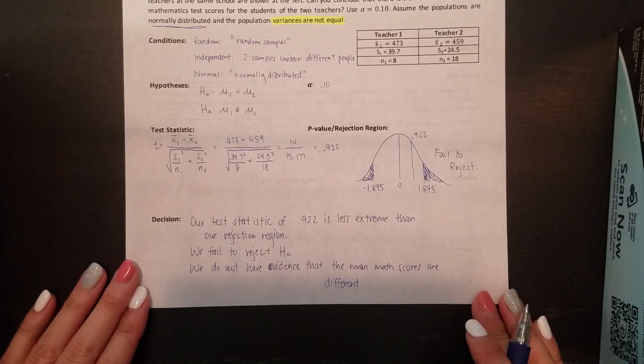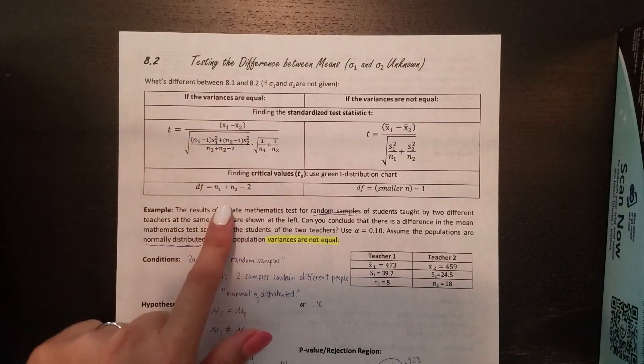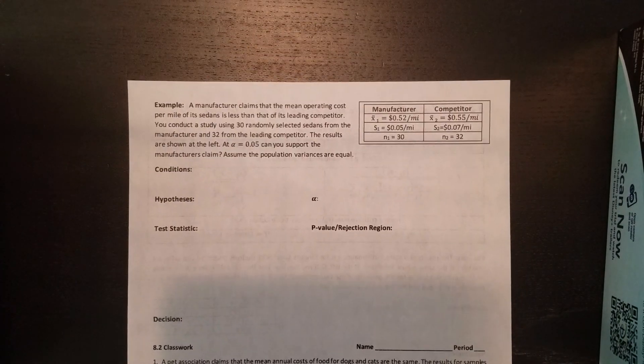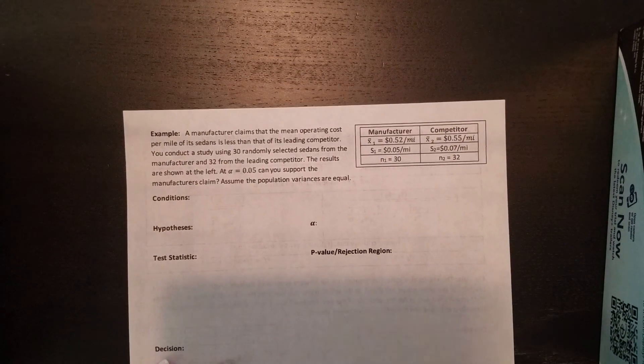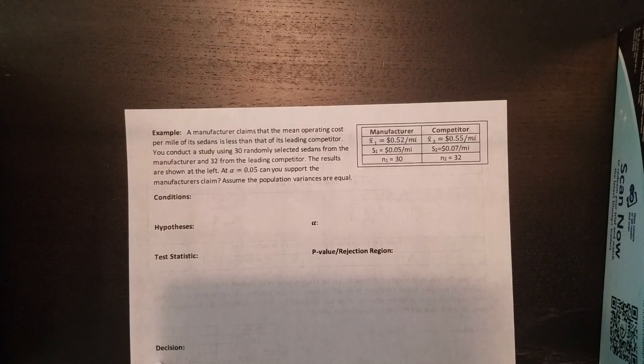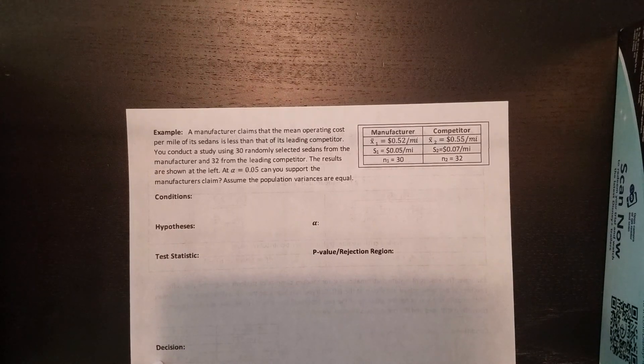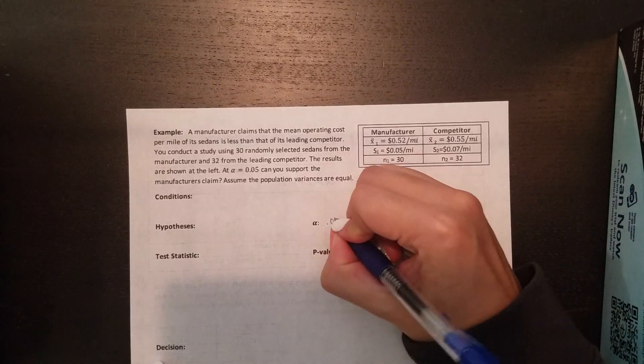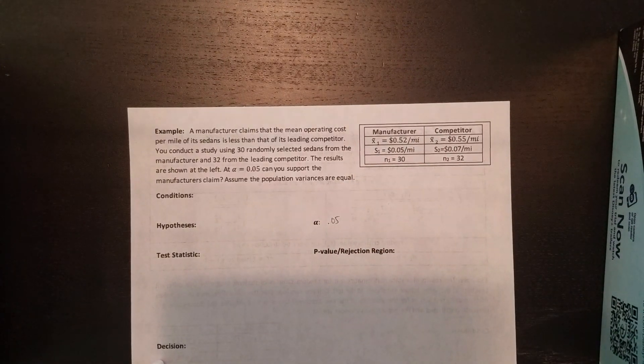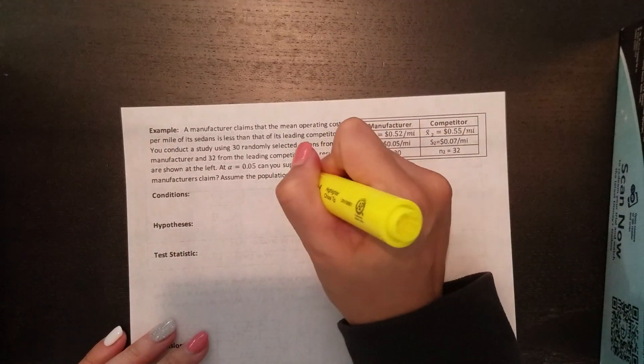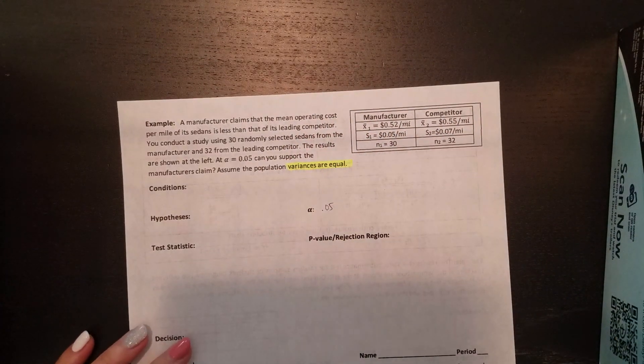So that's this section. I want to do one more example where this time the variances are equal with our crazier formula. Our second and last example, this time we have a manufacturer that claims that the mean operating cost per mile of its sedans is less than that of its leading competitor. You conduct a study using 30 randomly selected sedans from the manufacturer and 32 from the leading competitor. Results are shown. At 0.05 for alpha, can you support the manufacturer's claim? Assume the population variances are equal. So again, they've told us which formulas to use.